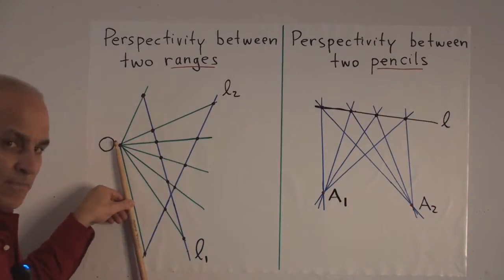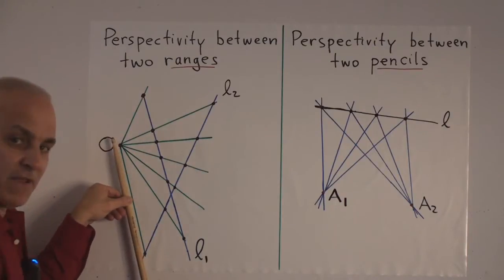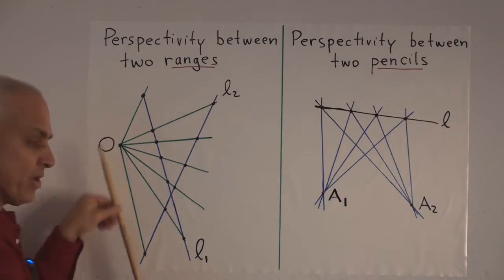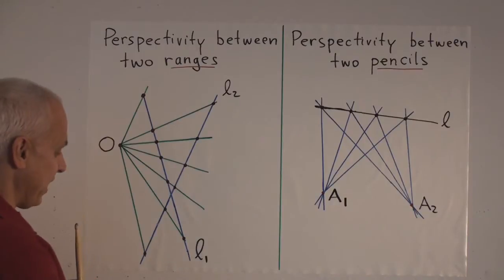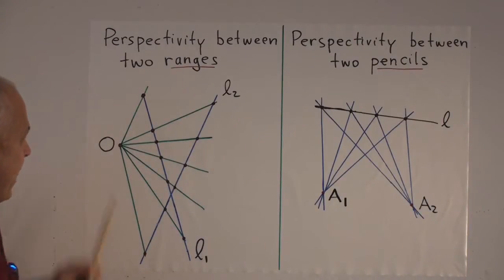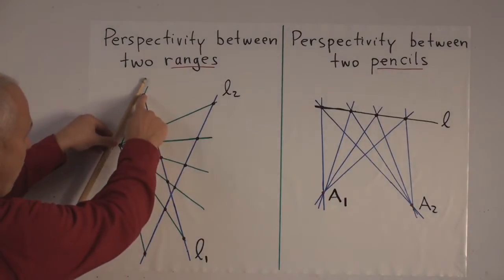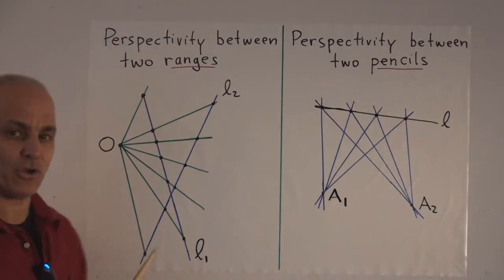So unless you have that point at infinity, then these wouldn't correspond. But with the point at infinity on L1, that would correspond to this point on L2. And similarly, this point on L1 would correspond to the point at infinity on L2.